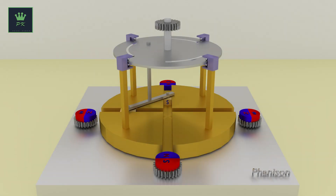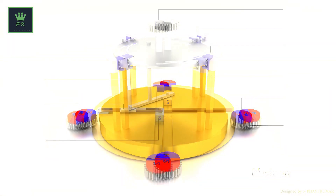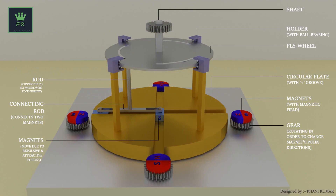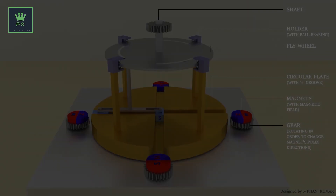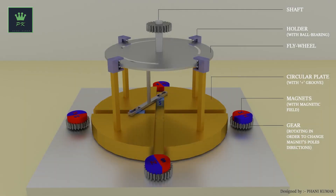A double slider crank mechanism is a four-bar chain having two turning and two sliding pairs, such that two pairs of the same kind are adjacent — this is known as a double slider crank chain. Let's watch the animation.